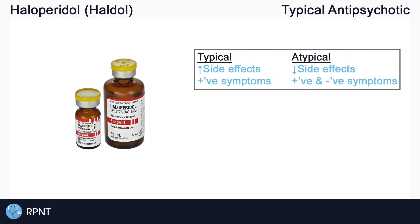Typical antipsychotics, also known as first generation or conventional antipsychotics, are used in the treatment of psychosis and behavioral problems. They can be highly effective, but do have a high risk of causing side effects, especially extrapyramidal symptoms, which we'll talk about more later.